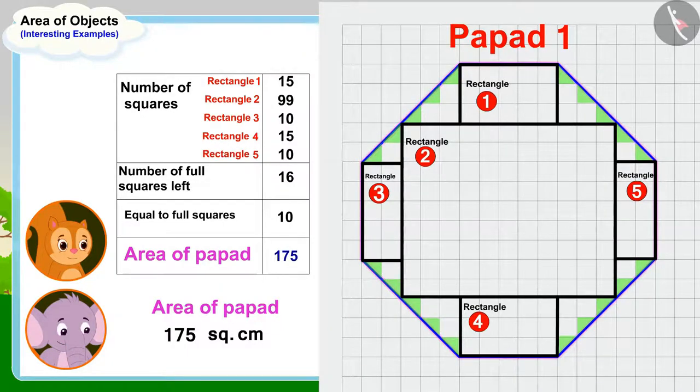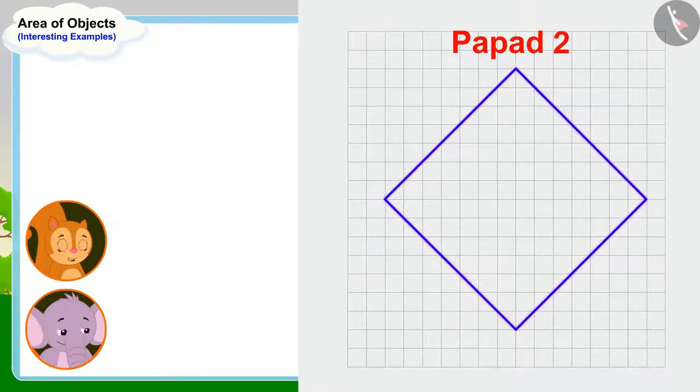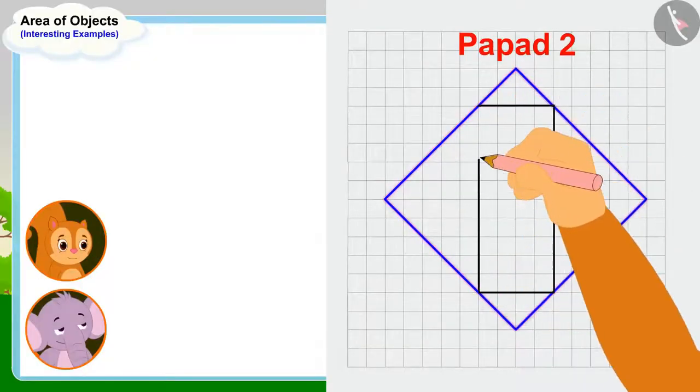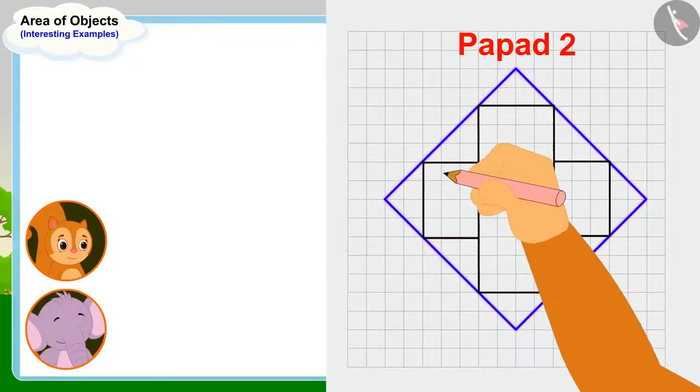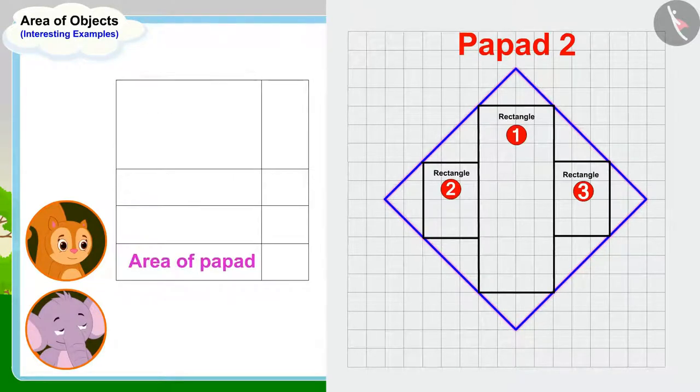Oh, wow, Appu, this is very easy and fun too. Let me find the area of this papar now. Chanda told Appu. Then Chanda made such rectangles in the area enclosed by the outline of the second papar. She then wrote down the number of squares falling in those rectangles in this way.